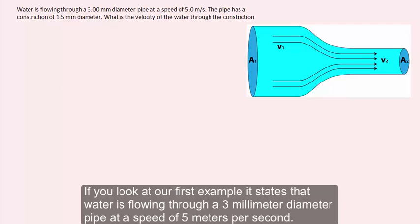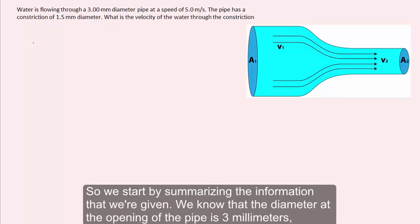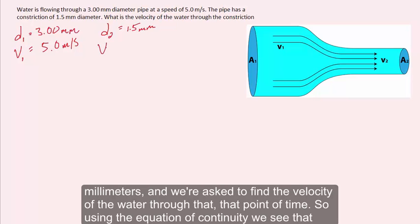In our first example, water is flowing through a 3 millimeter diameter pipe at a speed of 5 meters per second. The pipe has a constriction of 1.5 millimeter diameter, and we are asked to find the velocity of the water through the constriction. Summarizing the given information: the diameter at the opening is 3 millimeters with a flow velocity of 5 meters per second, and the diameter of the constriction is 1.5 millimeters.